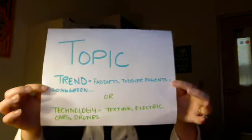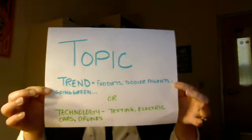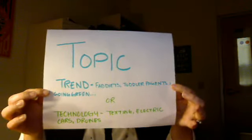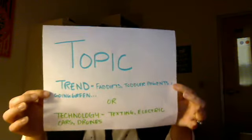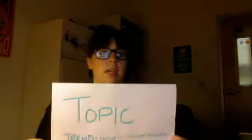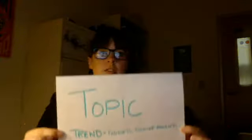Your topic for this essay is either a trend or a technology. On your assignment sheet, which you can find on Blackboard, there are lots of examples of things you can use, but I've listed a couple here as well. A trend would be something like fad diets, the master cleanse, toddler pageants, going green — which could include recycling or driving a hybrid car. A technology is something like text messaging, electric cars, or drones. If you're having trouble coming up with a topic, please email me.